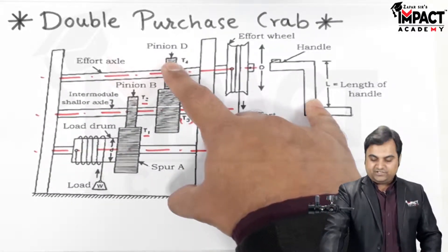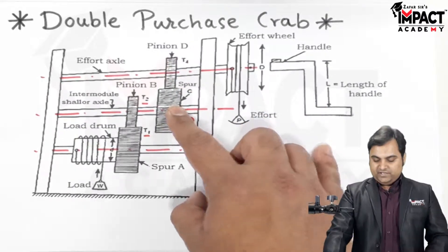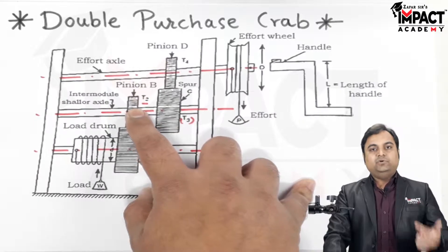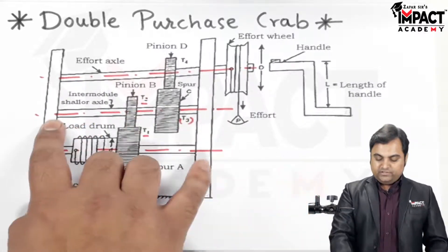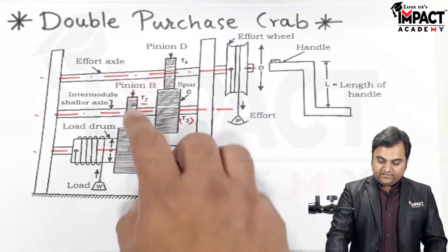D and C are connected as external gears, so if D rotates in clockwise direction, then C would be rotating in an anti-clockwise direction. If C rotates anti-clockwise, even B would be rotating anti-clockwise because they are on the same shaft.